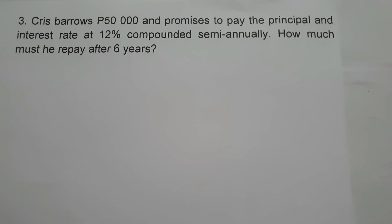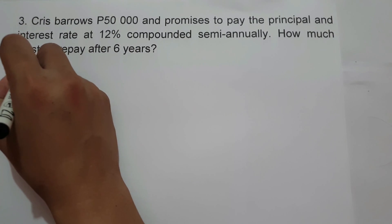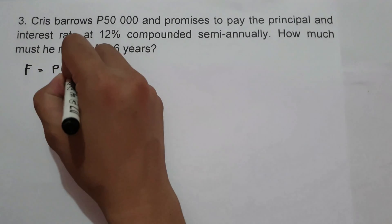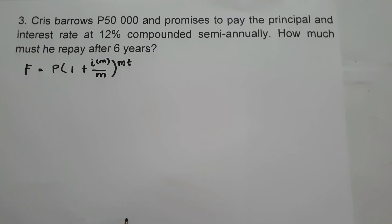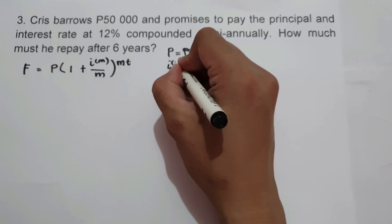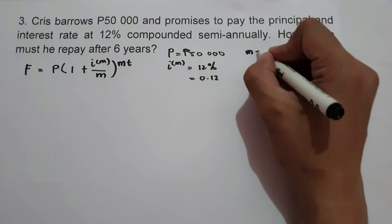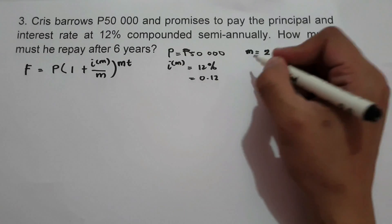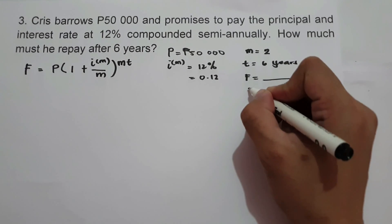On the last example, Chris borrows 50,000 and promises to pay the principal and interest at a rate of 12% compounded semi-annually. How much will he repay after 6 years? The given values are: P equals 50,000, nominal rate is 12% or 0.12, frequency of conversion M equals 2 since it is semi-annual, and time is 6 years. We are looking for the future value and also the interest.